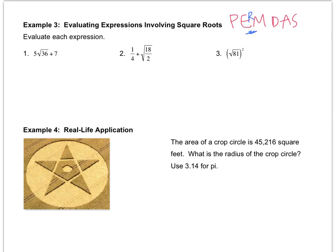So now let's evaluate now that we know the order. In number one, the first thing that comes is the square root of 36, the radical, which is 6. And when you have a symbol next to a number, then it's multiplication. So this ends up being 5 times 6 plus 7, which is 30 plus 7, which is 37.